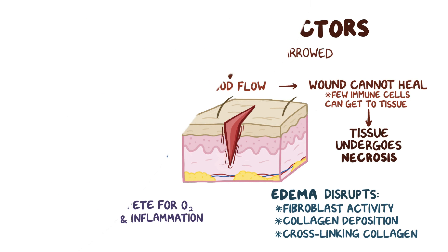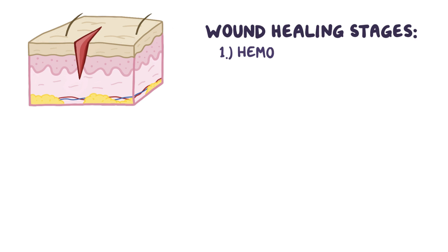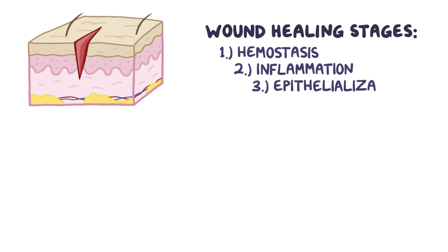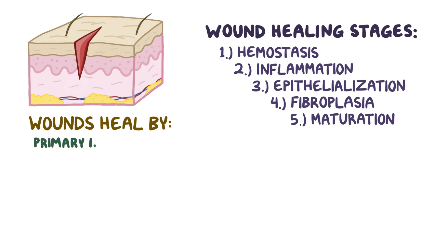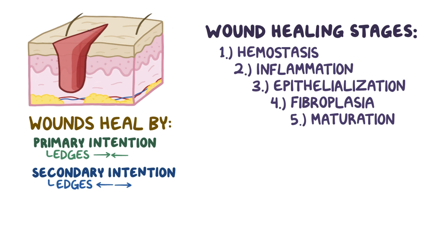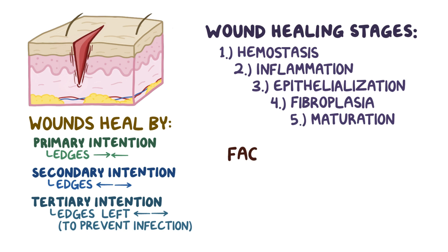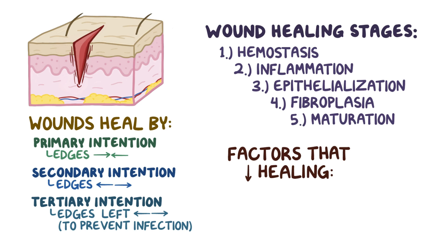As a quick recap: when damage occurs to tissue, healing proceeds through a predictable set of stages that include hemostasis, inflammation, epithelialization, fibroplasia, and maturation. Wounds can heal by primary intention, where the wound edges are brought together, or secondary intention, where the edges are far apart. Wound healing can also occur by tertiary intention, where the wound is left open to prevent infection. Some things that can impair wound healing include diminished blood flow, infections, and swelling.